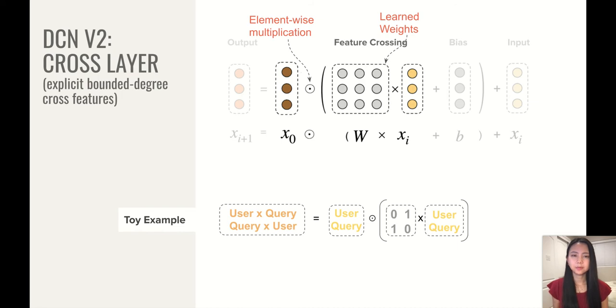So here is a toy example of two features: user and query. So when your weight matrix looks like this, it models interaction between user query and query to user. And when your weight matrix is changed to this, it models interaction between user query and query to query.